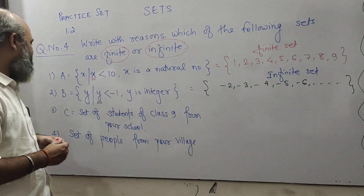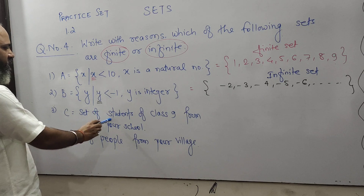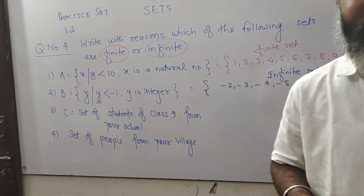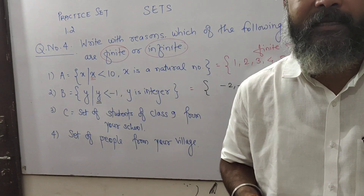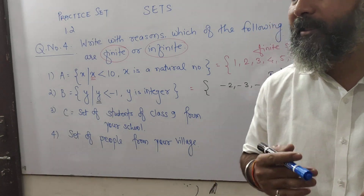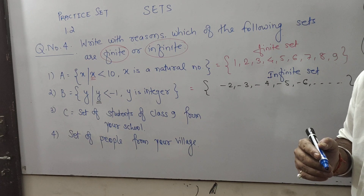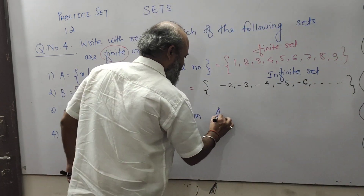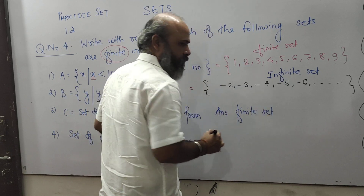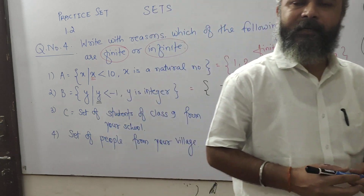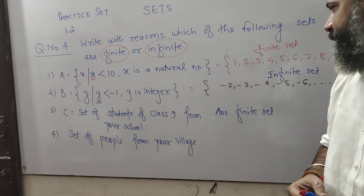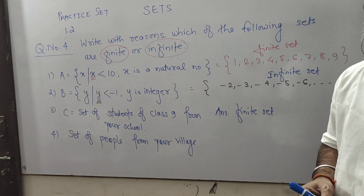Third one: C is the set of students of class 9 from your school. In your school, there are a countable number of students in class 9. If the elements of a set are countable, then the given set is a finite set. So the answer is finite set, because the students of class 9 are countable.